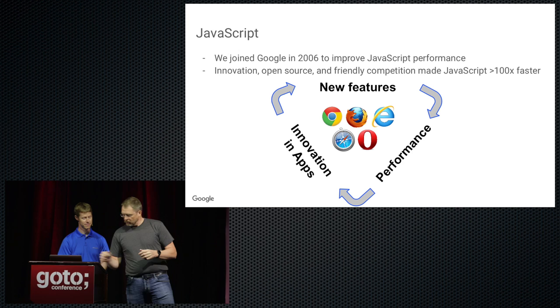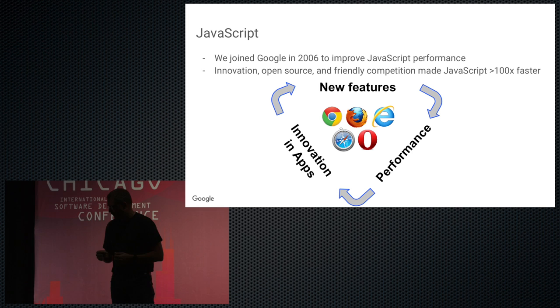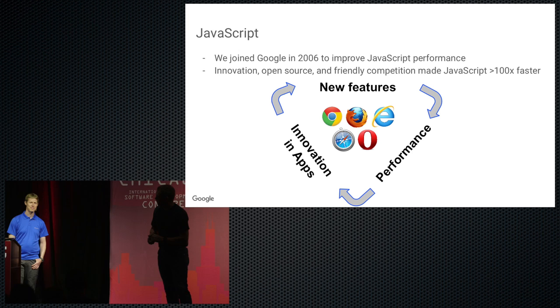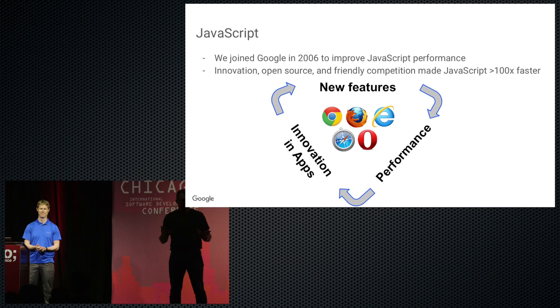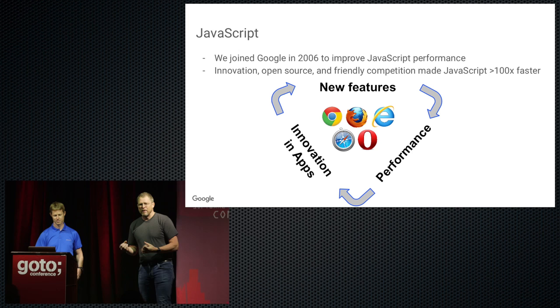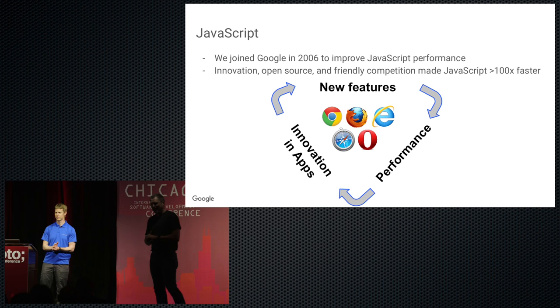When we joined Google nearly 10 years ago, we started building the V8 engine. JavaScript was very, very slow and our task was to make it much faster. We came up with a way to make it object oriented, and then we knew how to make it fast — that's how V8 came about. V8 is now used for everything: Node.js, gaming environments, and many browsers. The best part was it was open-sourced, so competitors had to match the performance, which created very fast browsers across the board.